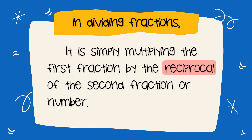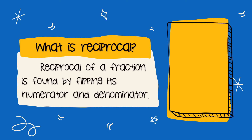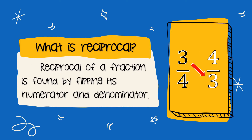First, what is reciprocal? The reciprocal of a fraction is found by flipping the numerator and denominator. For example, we have 3 fourths. The numerator is 3 and the denominator is 4. To get its reciprocal, we are going to flip the numerator and denominator, so it will be 4 thirds. The numerator will now be the denominator, and the denominator will now be the new numerator.